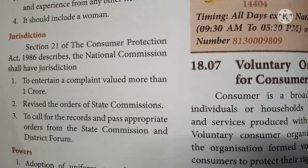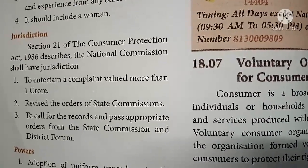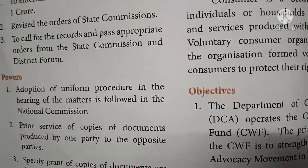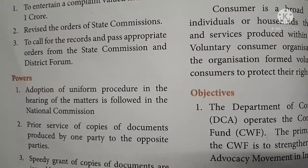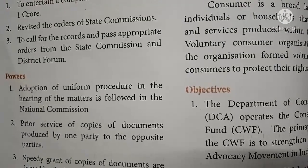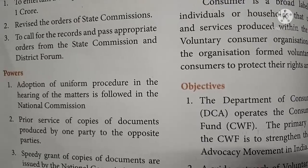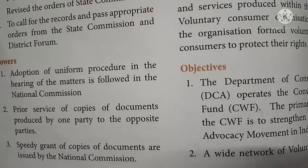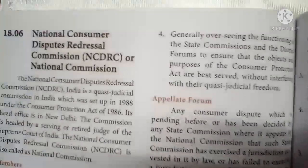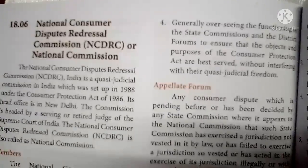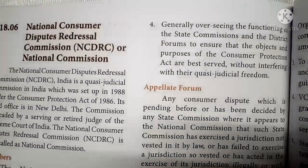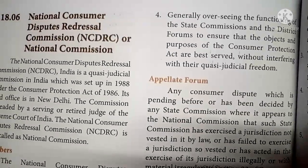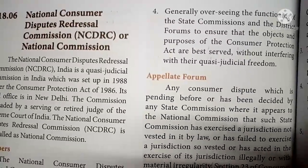The National Commission can revise orders of the state commission, call for records, and pass appropriate orders from the state commission and district forum. Its powers include adoption of uniform procedure in the hearing of matters, prior service of copies of documents produced by one party to the opposite parties, spending and grant of copies of documents, and generally overseeing the functioning of state commissions and district forums to ensure the object and purpose of the Consumer Protection Act are best served without interfering with their quasi-judicial freedoms.